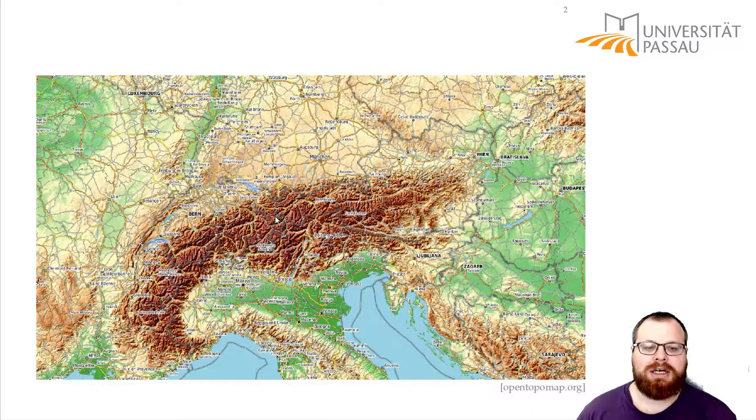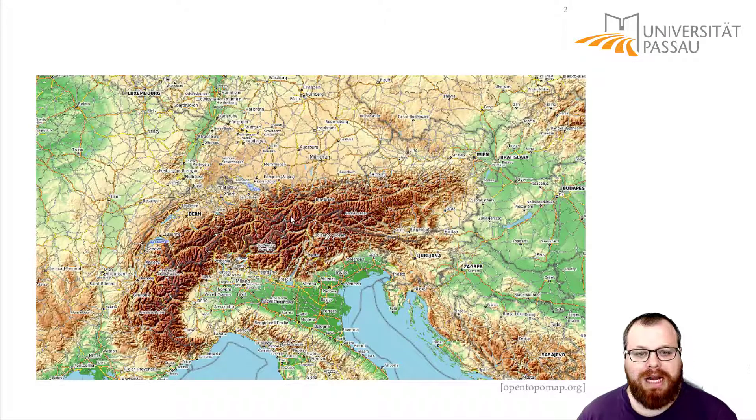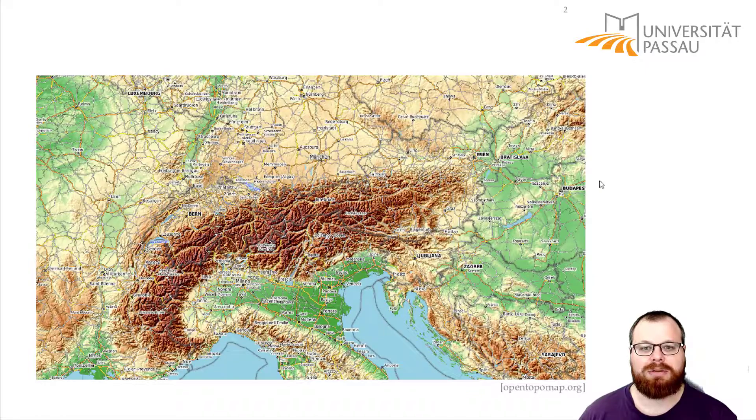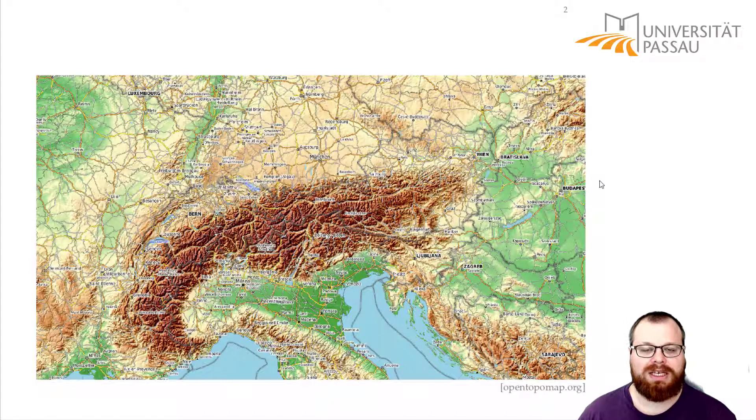To do that you have to measure for every single point in Europe what is its height. Of course that's way too much. So instead we only measure the height at some points and then we interpolate for everything in between. So let's say you fly over some area and every maybe 10 meters, maybe 100 meters, you do a measurement.